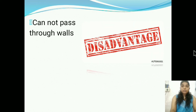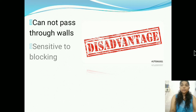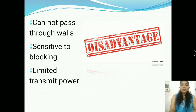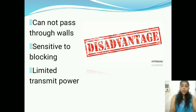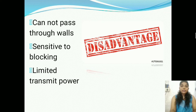Disadvantages of optical wireless systems: it cannot pass through walls and is sensitive to blocking. It transmits limited power. A break in the optical line-of-sight link leads to a huge loss of data. Moreover, atmospheric conditions can lead to link failures. Typical examples are dense smoke, kites, birds, rain, etc.